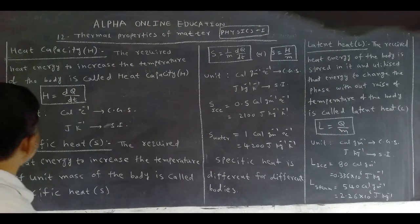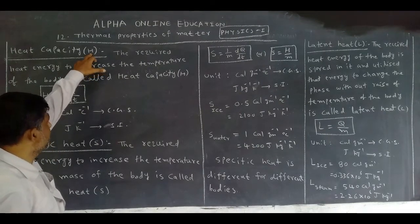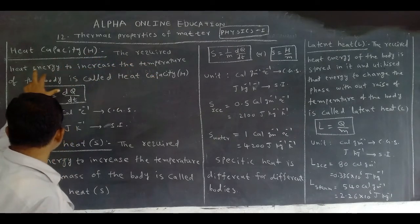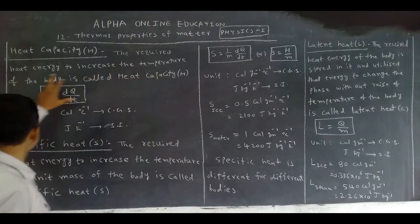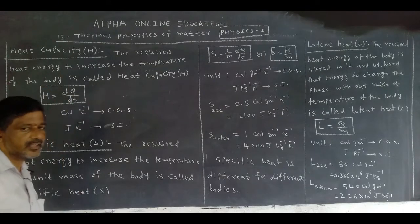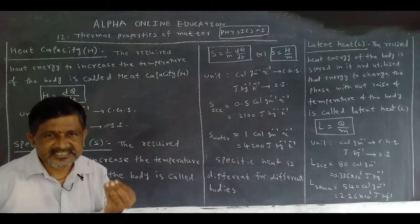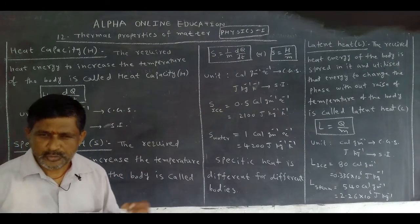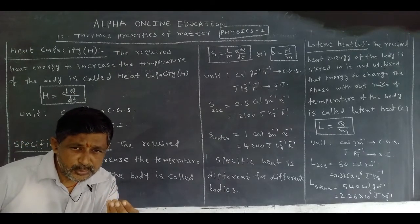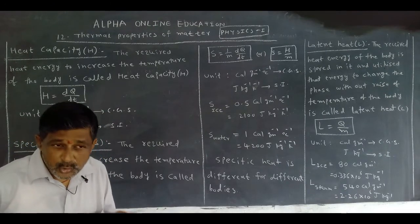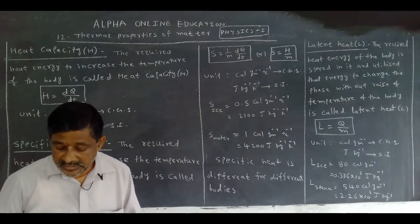Heat capacity is denoted by the symbol H. What is heat capacity? The required heat energy to increase the temperature of the body is called heat capacity. If you give the heat energy, only its temperature increases. So the required heat energy to increase the temperature of the body is called heat capacity.